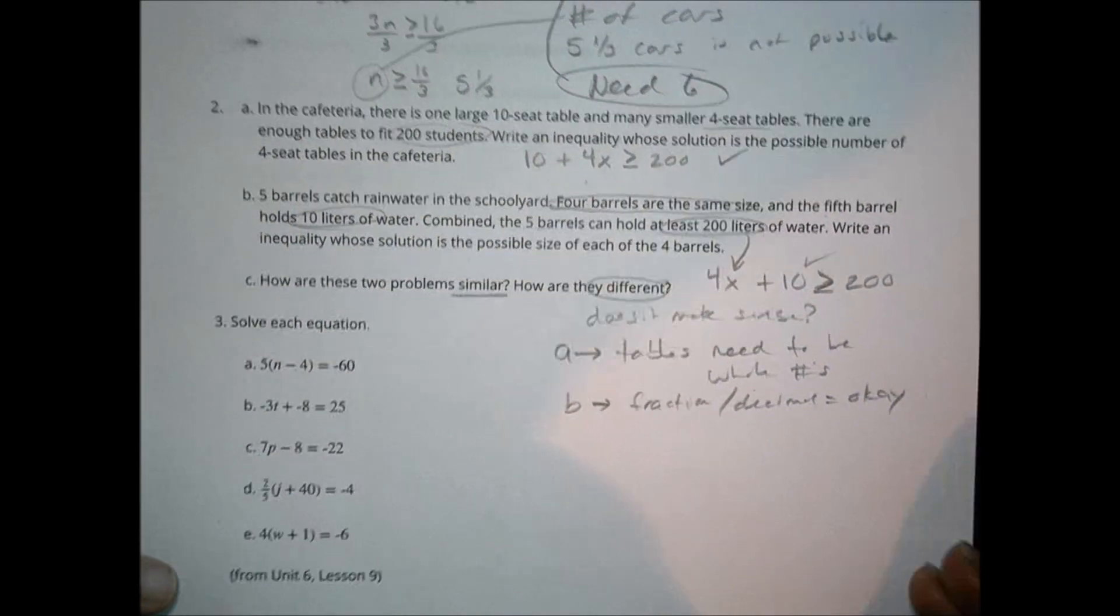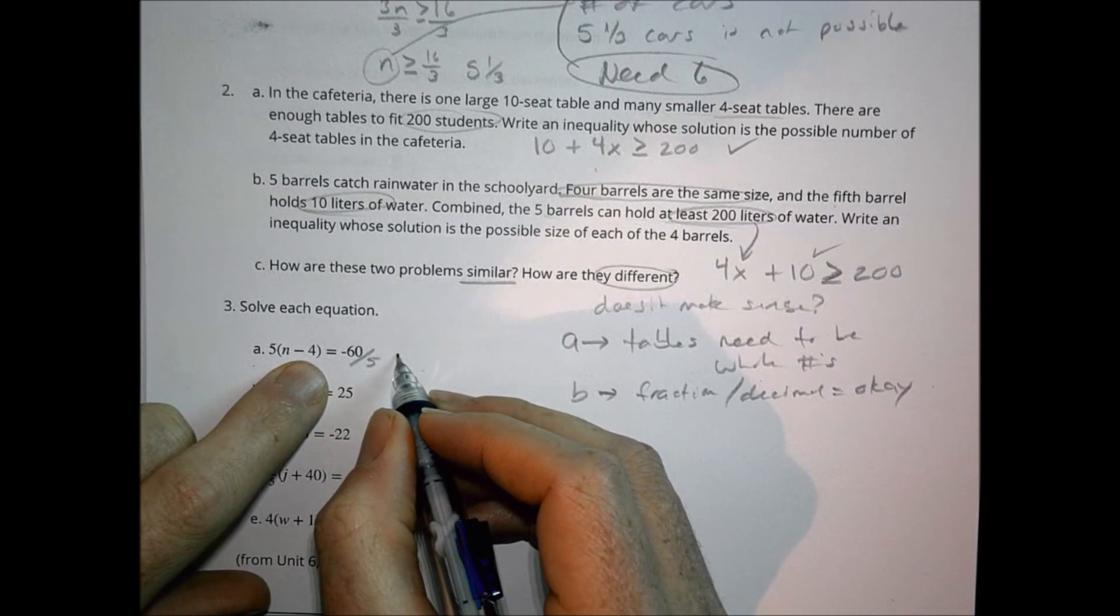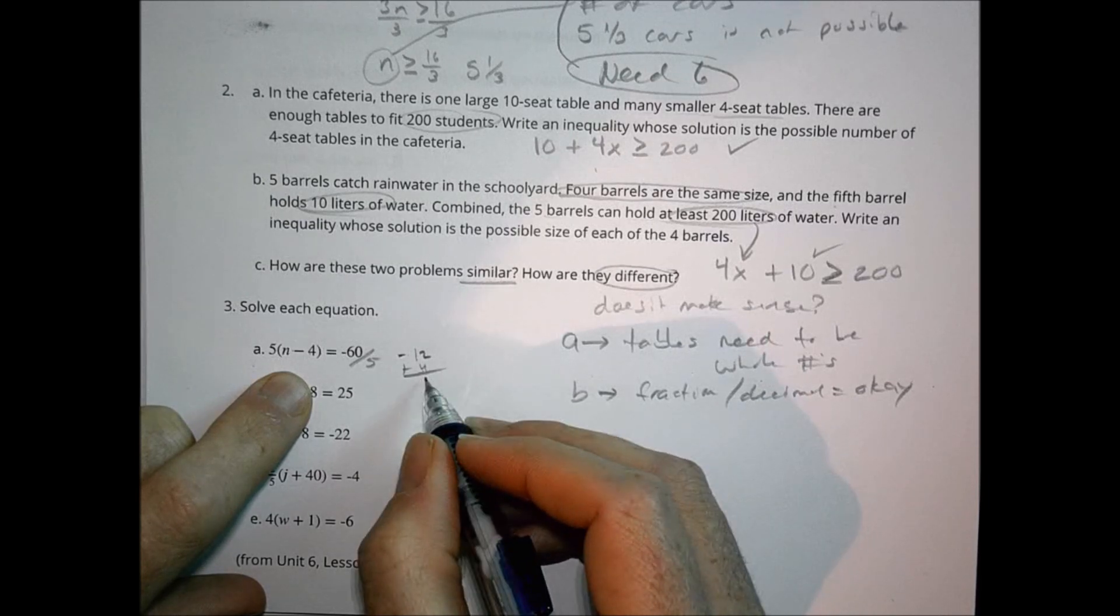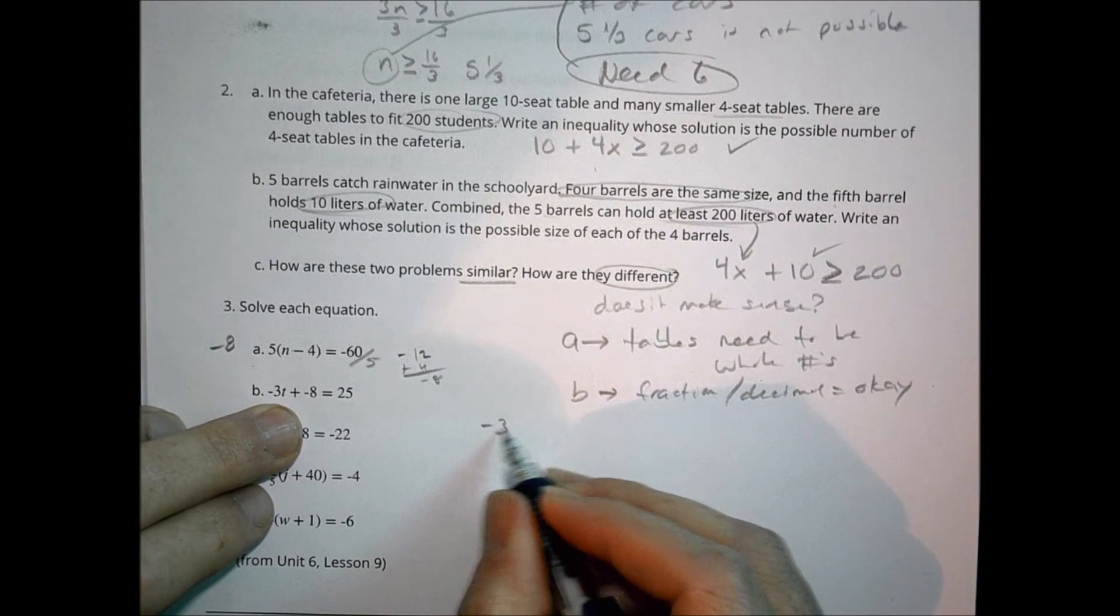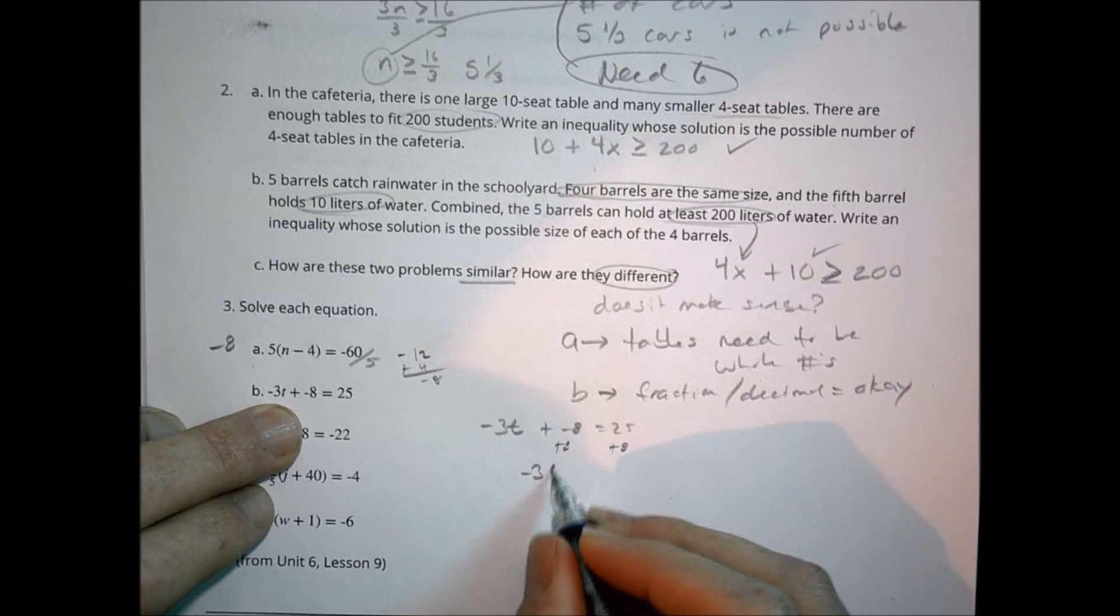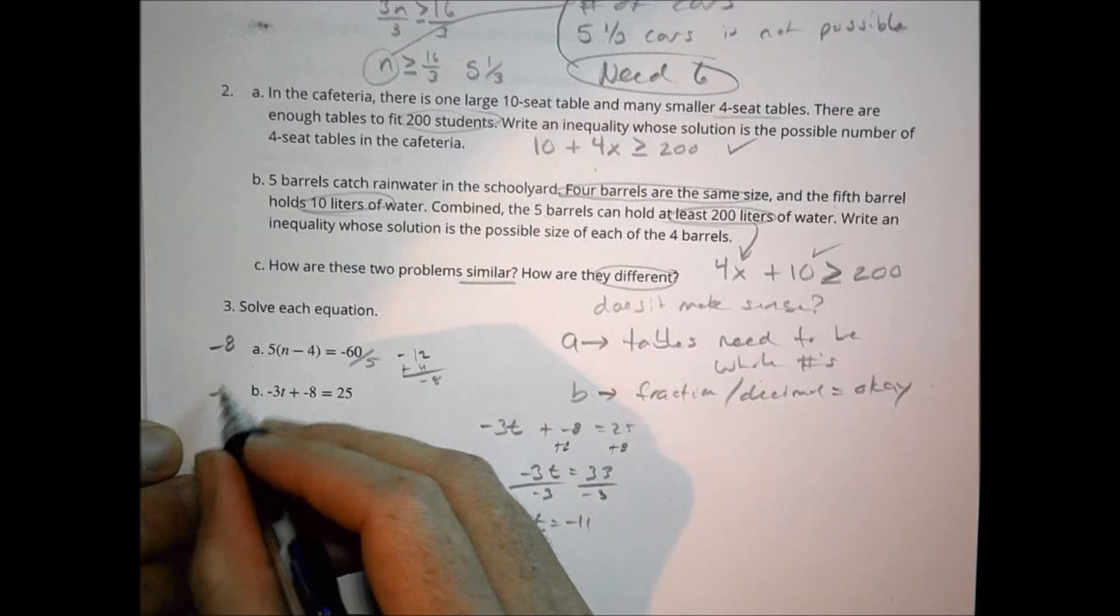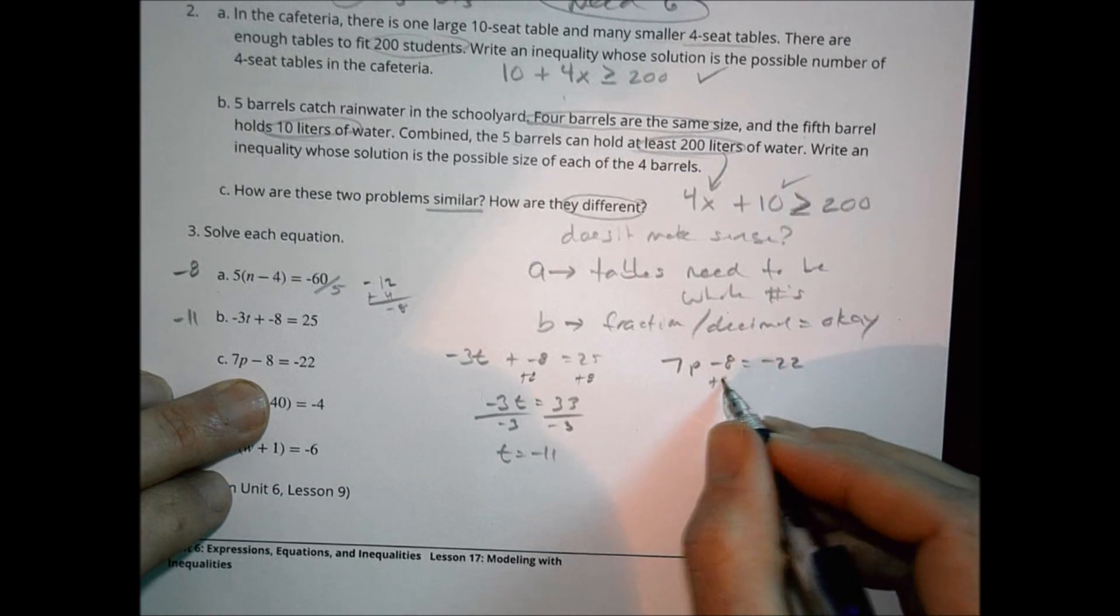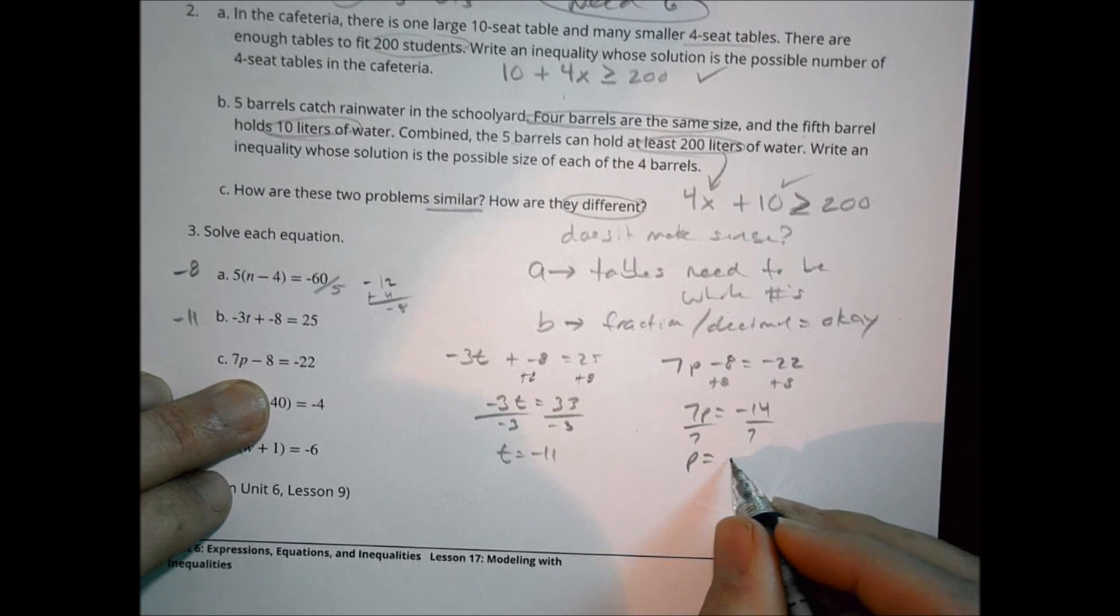Number three. I'm going to solve these equations. For the first one, we divide both sides by 5. Negative 60 divided by 5 is negative 12. So we have N minus 4 equals negative 12. Let's add 4 to both sides. Negative 12 plus 4 is negative 8. For B, we have negative 3T plus negative 8 equals 25. I add 8. Negative 3T equals 33. I divide both sides by negative 3 and T equals negative 11. This one here, we have 7P minus 8 equals negative 22. I add 8. 7P equals negative 14. Divide both sides by 7 and P is equal to negative 2.